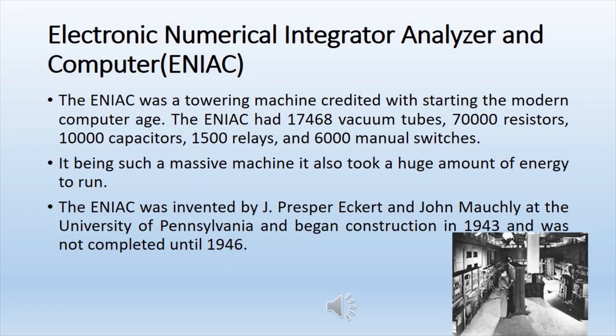The ENIAC — Electronic Numerical Integrator Analyzer and Computer — was a towering machine credited with starting the modern computer age. The ENIAC had 17,468 vacuum tubes, 70,000 resistors, 10,000 capacitors, 1,500 relays, and 6,000 manual switches. Being such a massive machine, it also took a huge amount of energy to run. The ENIAC was invented by J. Presper Eckert and John Mauchly at the University of Pennsylvania, and began construction in 1943, completing in 1946.